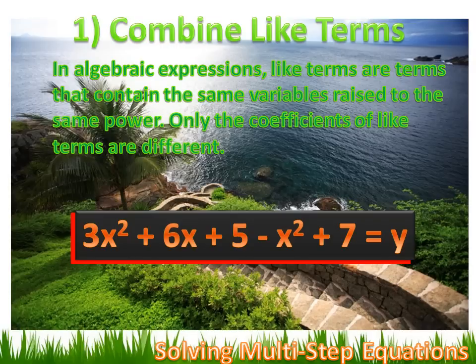The terms are similar — they're both x squared. I've only got one x raised to the first power, so there are no like terms for that; I just have plus 6x. But I've got two numbers: a 5 and a 7, and I can combine those because they're like terms.